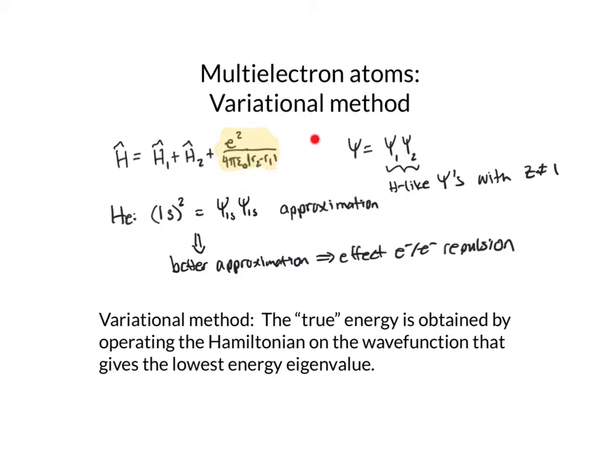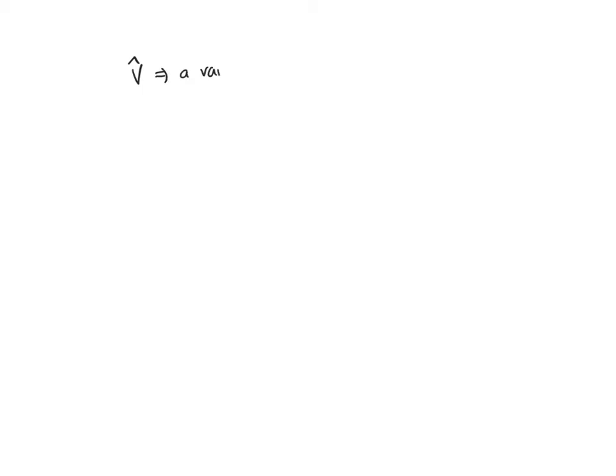Remember that repulsive energies raise the energy of the system and attractive energies lower the energy of the system. The trick to the variational method is that we are going to write our operator for the potential energy in terms of a variational parameter — something that we can adjust the value of in order to get the minimum energy eigenvalue when we operate the full Hamiltonian on our guess wave function.